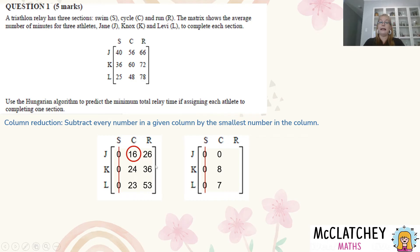Let's move on to this one, the run leg. The smallest number there is 26. So 26 take away 26 gives me 0, 36 take away 26 gives me 10, and 53 take away 26 gives me 27.